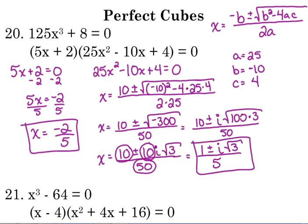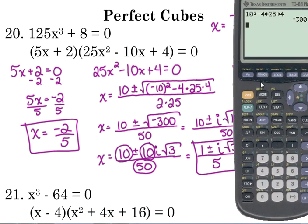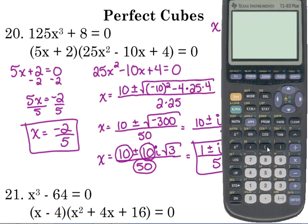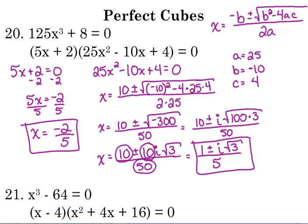So this produces your other two answers. We had 1. We needed 2 more. We've got 1 plus i square root of 3 divided by 5 and 1 minus i square root of 3 divided by 5. Now you've got to be kind of careful with this. If you're checking this one, you need to put that numerator in parentheses. When you check it, you need to put the numerator in parentheses and then 125x cubed plus 8.